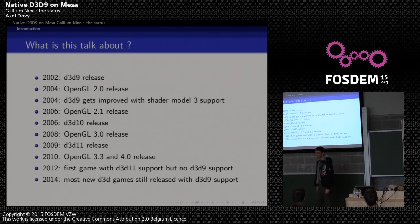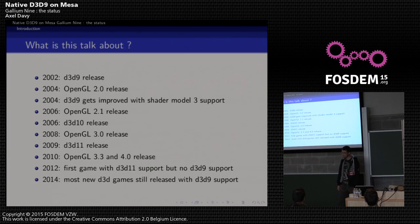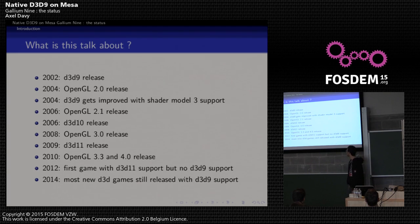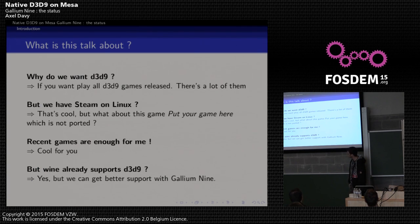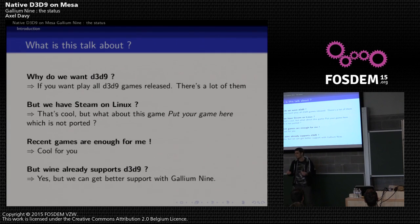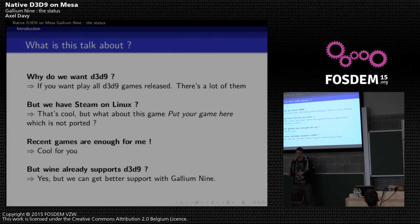Why do we want D3D9 support natively in the Mesa driver? Basically, a lot of games support D3D9. Even today we have many D3D games still using this API. The first major game using D3D11 and not D3D9 was three years ago. So if we can have a very fast and working path for all these games, we can be quite happy. We have Steam on Linux, which is a revolution for the Linux desktop, but there are also very old games you'd love to play again in good conditions.